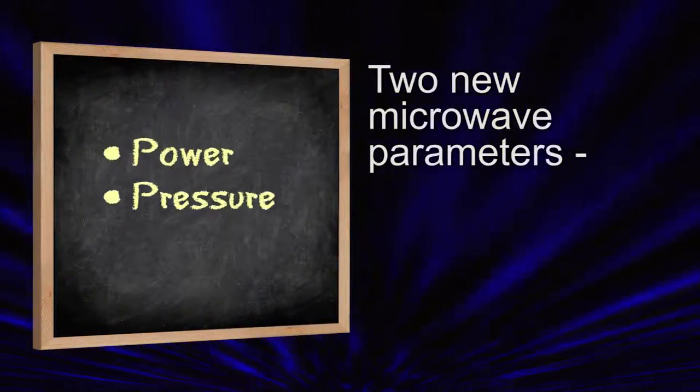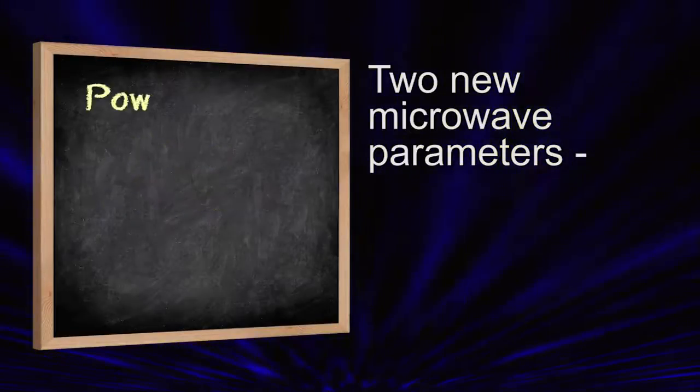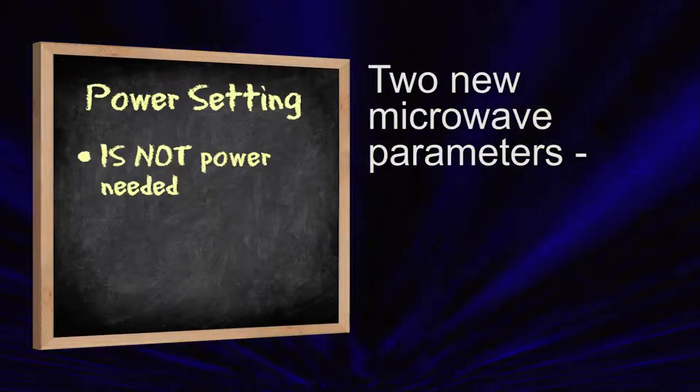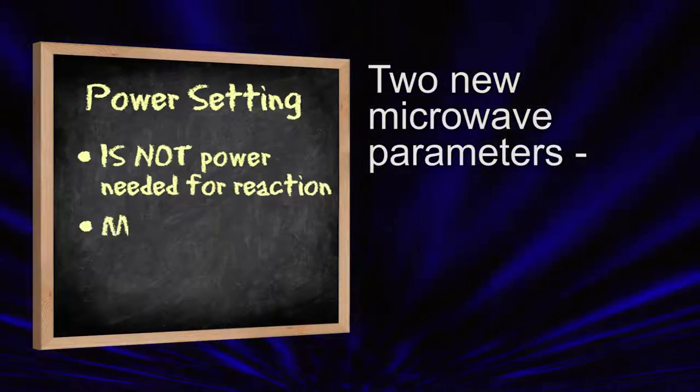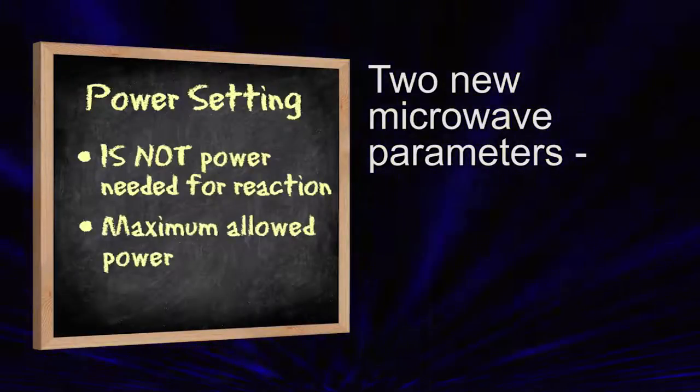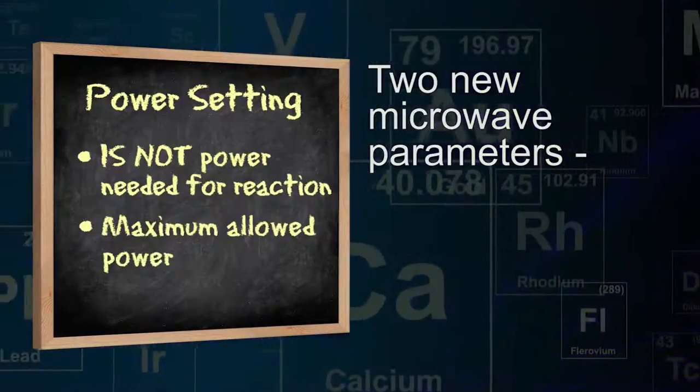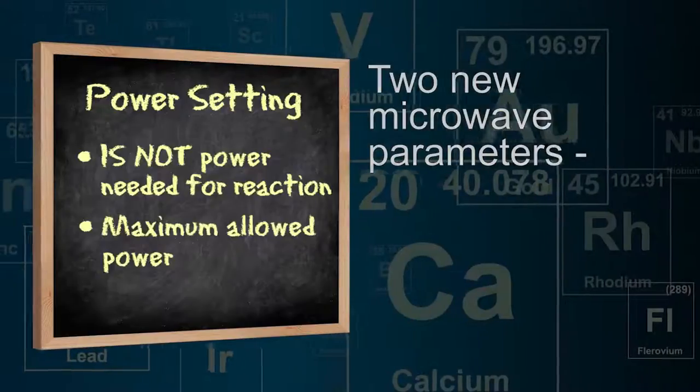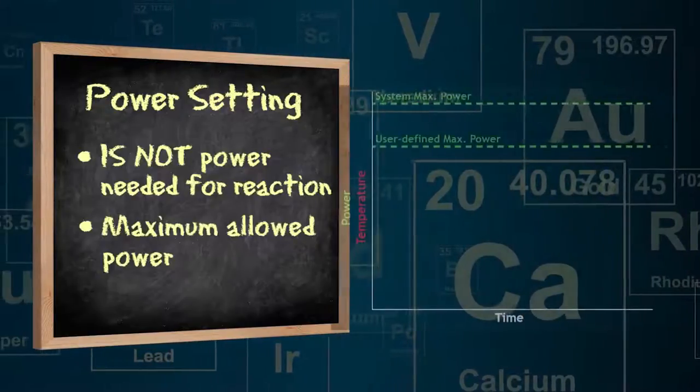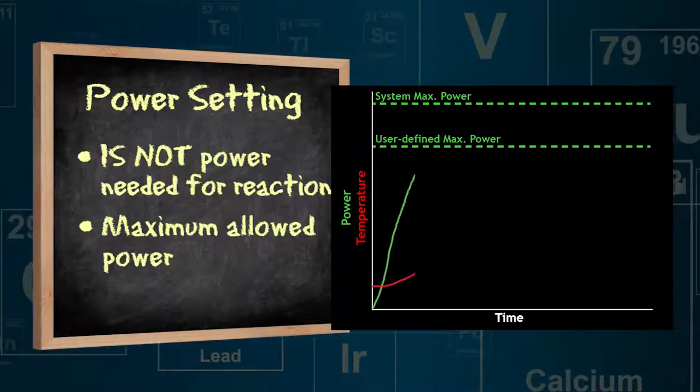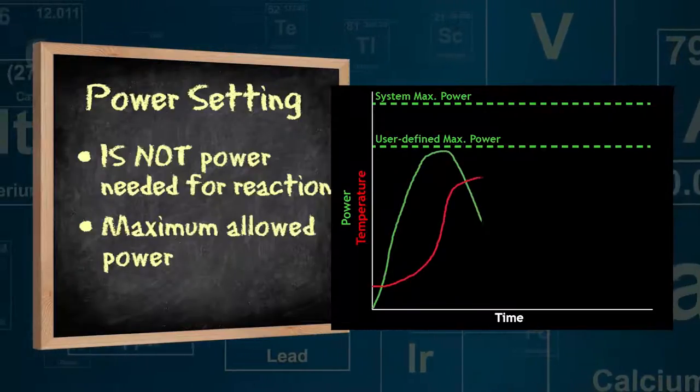Two new parameters to consider in microwave chemistry are the power and pressure settings. The power setting is not the amount of power used to heat a reaction, but rather the maximum allowed power. CEM's intelligent power control will automatically modulate the power output to heat a reaction solution to the desired temperature as quickly as possible without temperature overshoot and maintain that temperature.